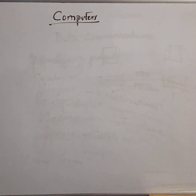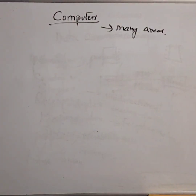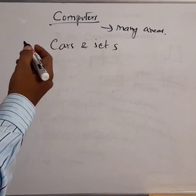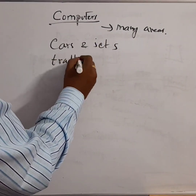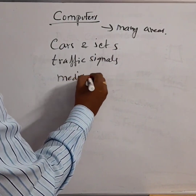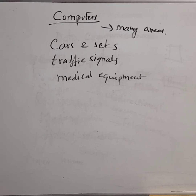Computers are commonly used in many areas. They are an important utility for people, especially those running organizations and industries. In today's world, almost everything runs by computers. For example, computers have been used to design cars and jets, run traffic signals, and operate medical equipment.